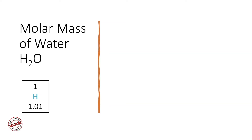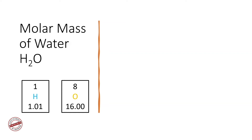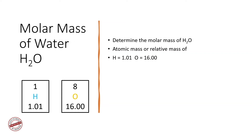Hydrogen has a relative atomic mass of 1.01 and an atomic number of 1. Oxygen has an atomic number of 8 and a relative atomic mass of 16.00. We are going to use these numbers to calculate the molar mass, and we have identified the relative atomic masses of hydrogen and oxygen.